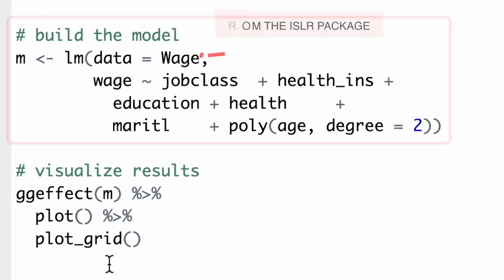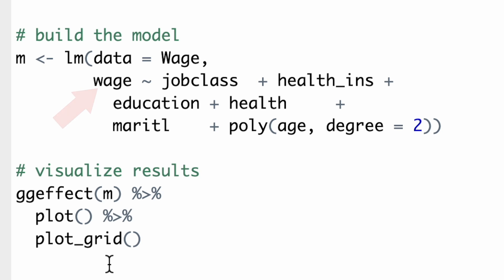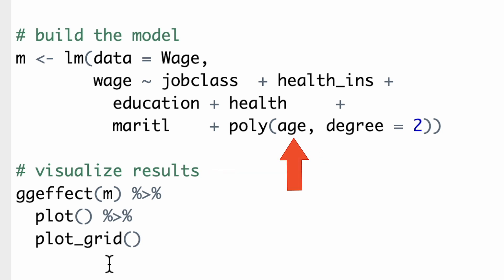In the first line, we'll use the wage dataset from the ISLR package to build the multivariable linear model. This model investigates how wages vary across different job categories, health insurance statuses, education levels, health conditions, marital statuses, and even age. Since age is a continuous variable, we allow for a non-linear relationship by including it as a second-degree polynomial term.